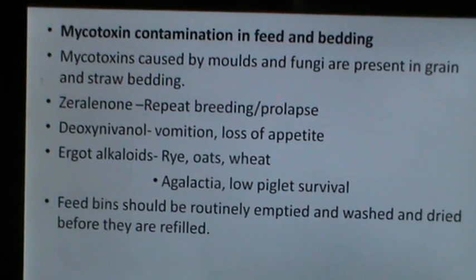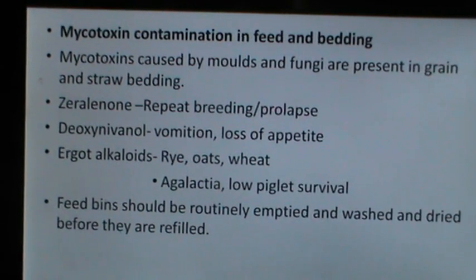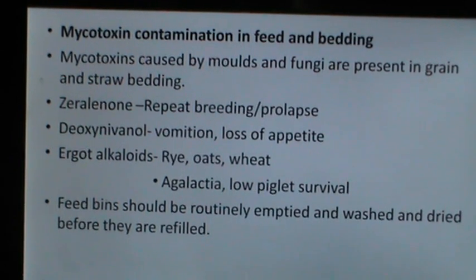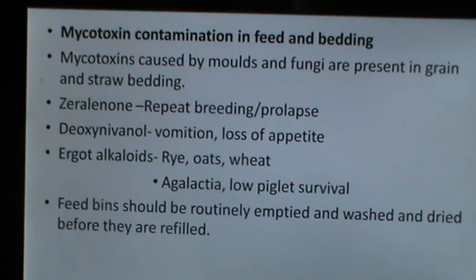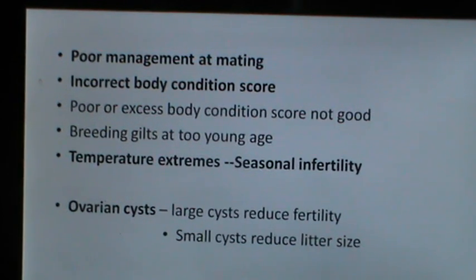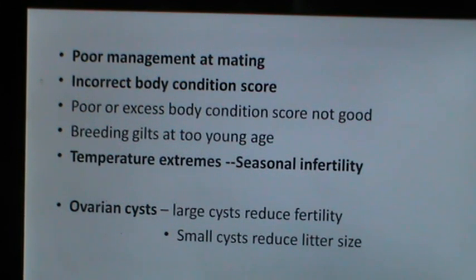Deoxynivalenol can cause vomiting and loss of appetite. Ergot alkaloids in rye, oats, and wheat may cause egg ejection and low blastocyst survival. Feed bins should be routinely emptied, washed, and dried before refilling. Poor management at mating is another cause of sub-fertility — incorrect body condition score and breeding gilts at too young an age. Extremes of environmental temperature can result in seasonal infertility in swine herds.